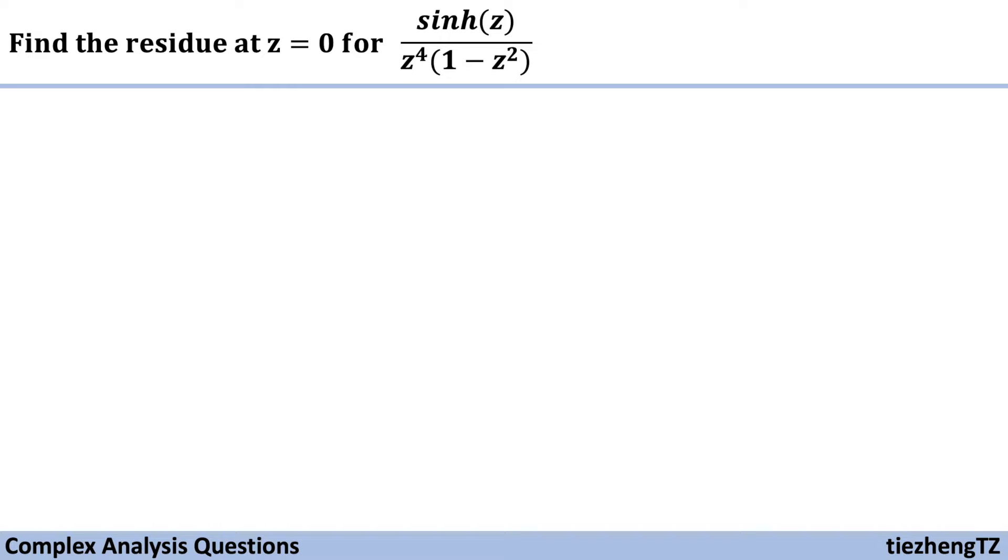We have already introduced many example questions about how to find residues. The complex number which is the coefficient of 1 over z minus z0 in the expansion form is called the residue of that function f at the isolated singular point z0.